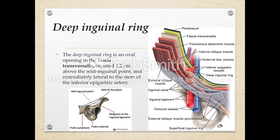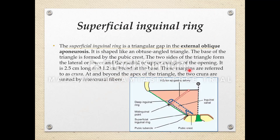The inguinal canal is oblique — the two openings are at different distances from the skin. The superficial inguinal ring is an obtuse-angle triangle in the external oblique aponeurosis. Its base is formed by the pubic crest, with two sides: an upper or medial limb and a lower or lateral limb. It is about 2.5 centimeters long and 1.2 centimeters broad at the base.